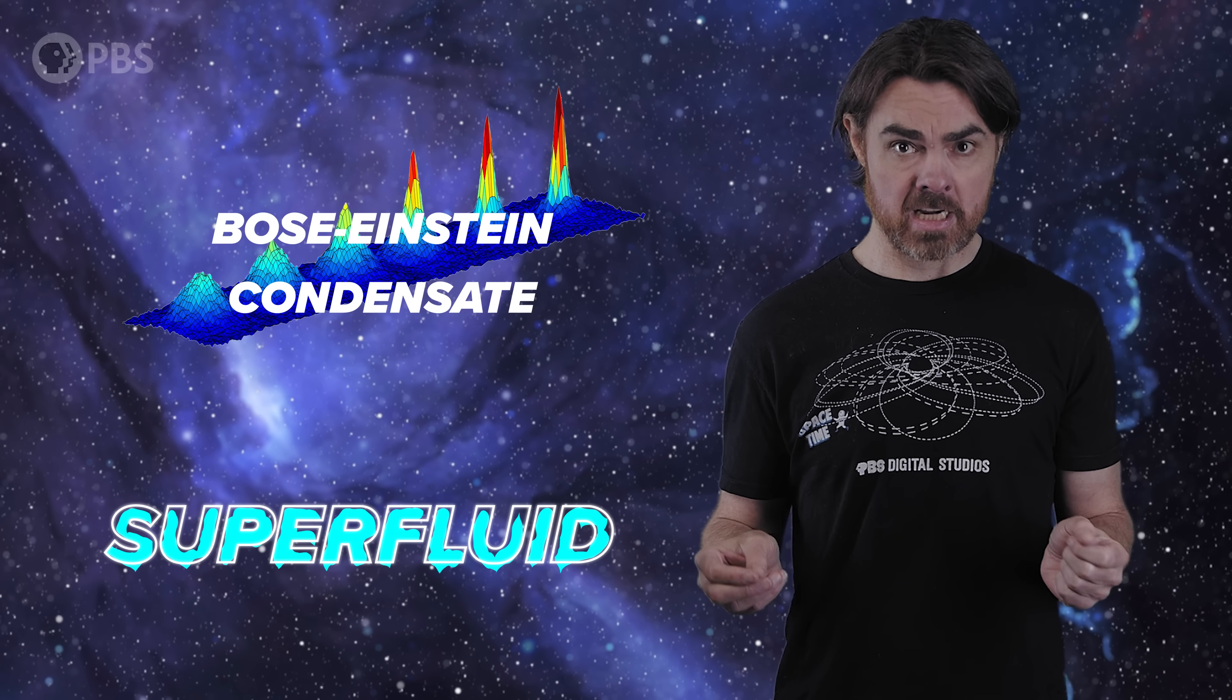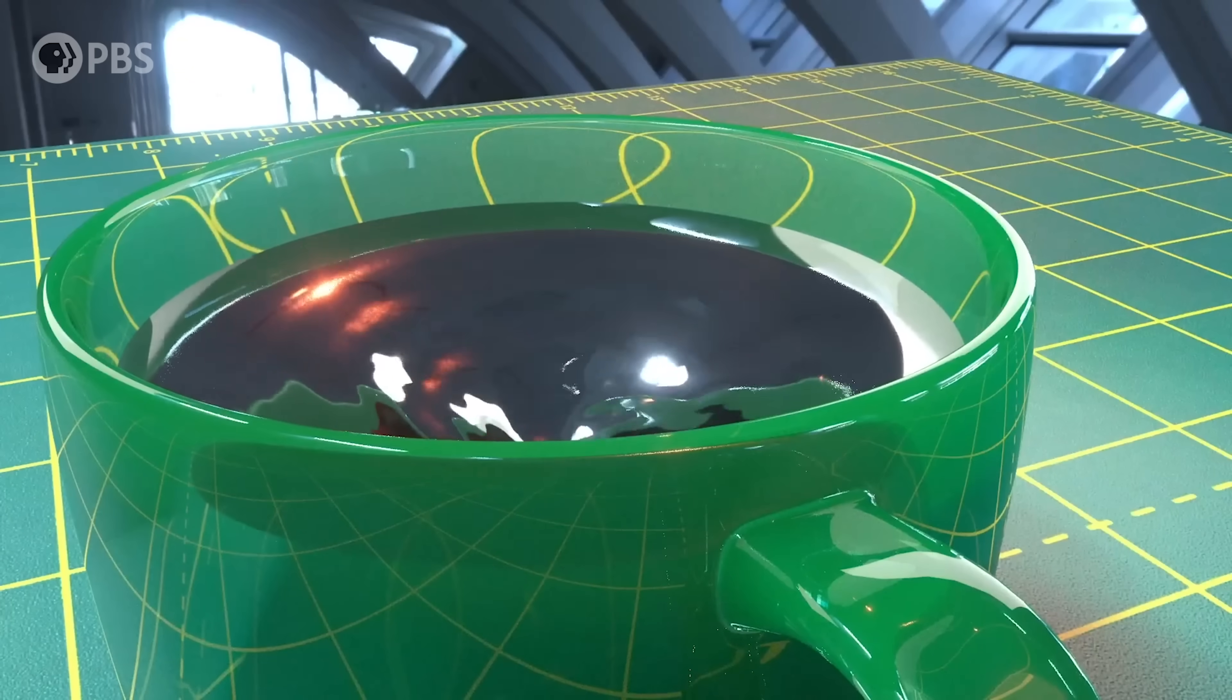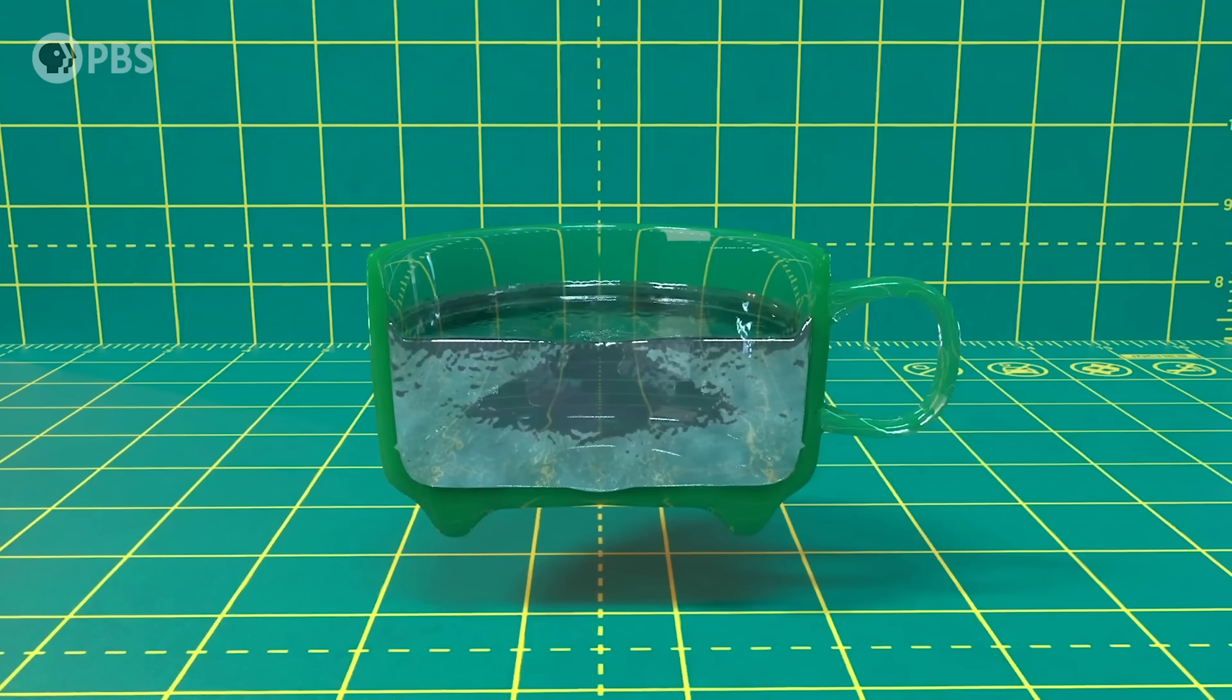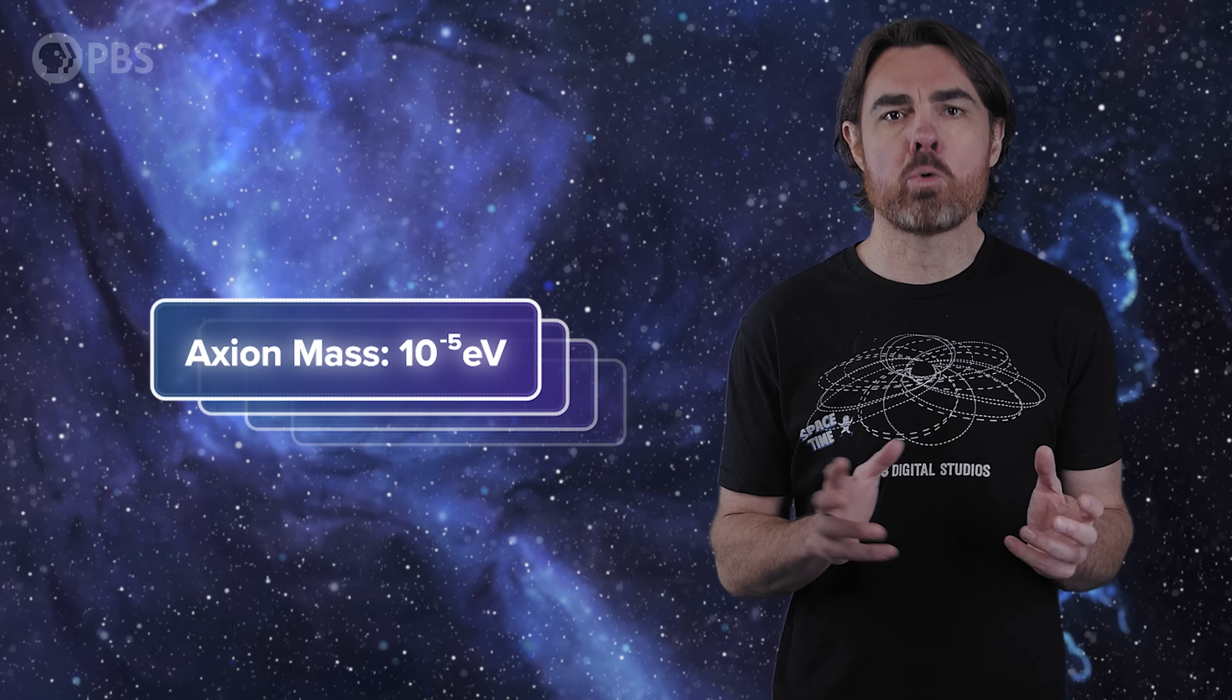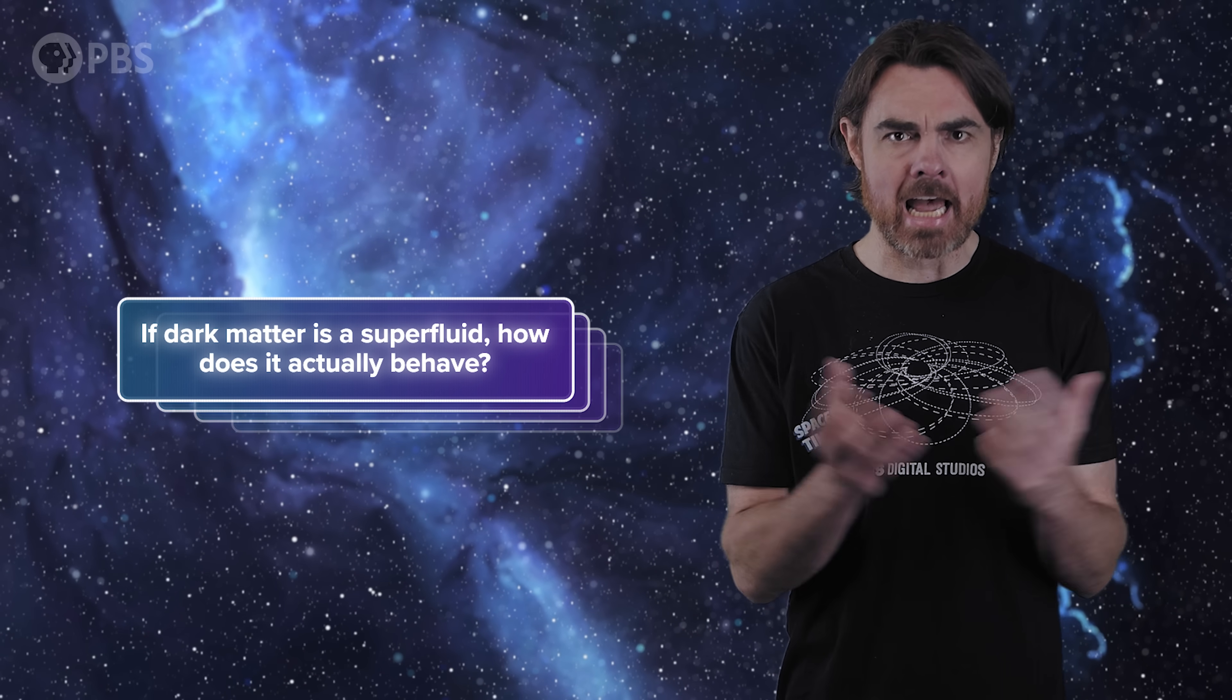Now, if you've been keeping up with recent spacetime episodes, you might recall what happens if you have a fluid of non-interacting bosons with overlapping wave functions. You get a Bose-Einstein condensate, manifesting as a superfluid. Because the particles of a superfluid can't interact, they can't exchange energy, which means they have no friction—they flow perfectly with zero viscosity. And that's what axionic dark matter would be: a superfluid. For example, if the axion predicted by quantum chromodynamics has a mass of around 10 to the minus 5 electron volts, it would have formed in sufficient numbers in the early universe to account for all of the dark matter and to exist in this superfluid state.